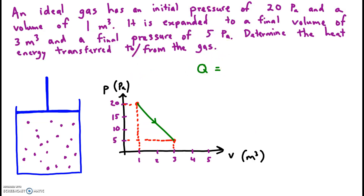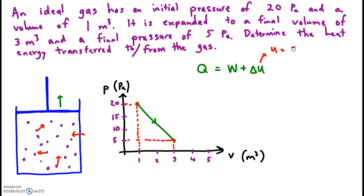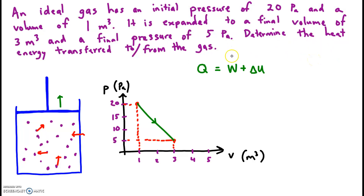When you add heat to the system, it could do two things. It could do work, and the system expands because of the heat that you added in, or it can increase the internal energy of the particles, which means they're going faster. So if we can find work and delta u, we add them together to get the unknown.